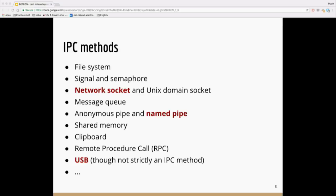Not all IPC types are vulnerable to our attack model. The common feature of vulnerable IPC methods is that there is a server process which binds to a specific name or identifier and waits for connections from the client. We focus on three IPC methods: network sockets, Windows named pipes, and USB. Strictly speaking, USB is not an IPC, but it is similar in that it also follows client-server architecture and USB communication happens inside a computer, so the MITMA attacker can exploit it. IPC methods secure against our attack, for example, are unnamed pipes — both endpoints are created at the same time by the same user, leaving no opportunity for an untrusted process to get in.